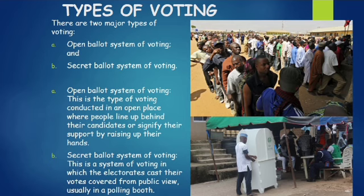B. Secret ballot system of voting. This is a system of voting in which the electorate cast their votes covered from public view, usually in a polling booth.